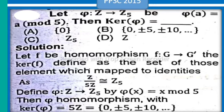In this lecture, I will solve Pakistan's Professional Services Commission 2015 MCQ. Let phi be a function from Z to Z5, where phi of a equals a mod 5. Then kernel of phi equals?